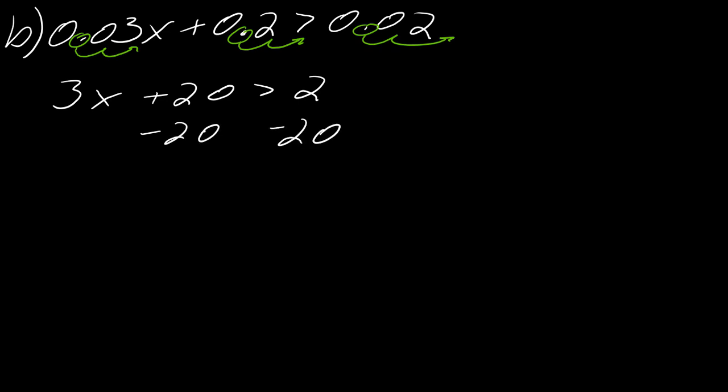And then I can subtract off the 20. So I can just really solve as usual now. So now this is 3x is greater than negative 18. Divide both sides by 3. Now I'm dividing by a positive number. So as long as I'm dividing by a positive number, I don't have to flip the direction of the inequality. So this is x is greater than negative 6.